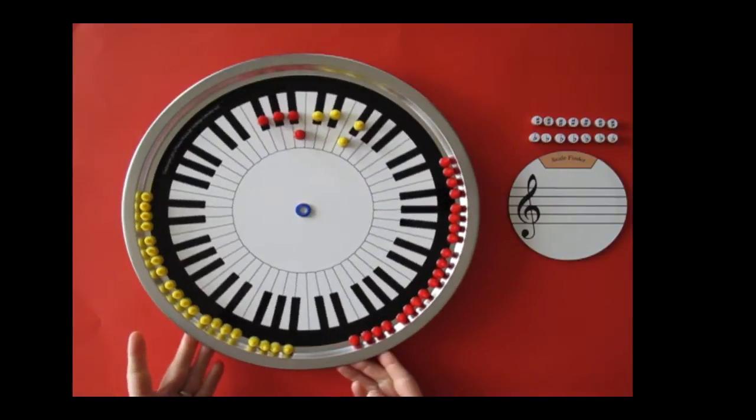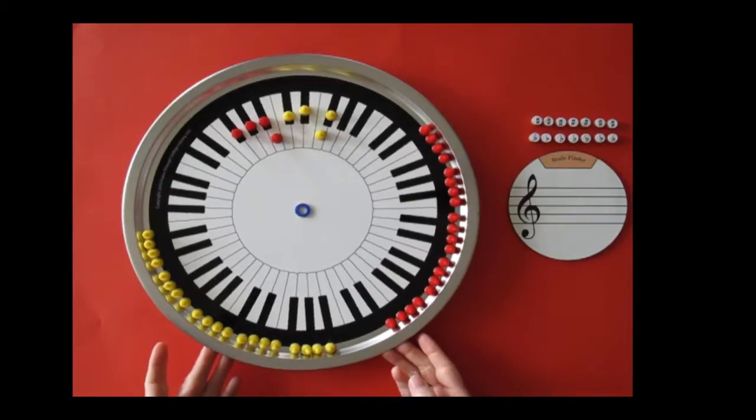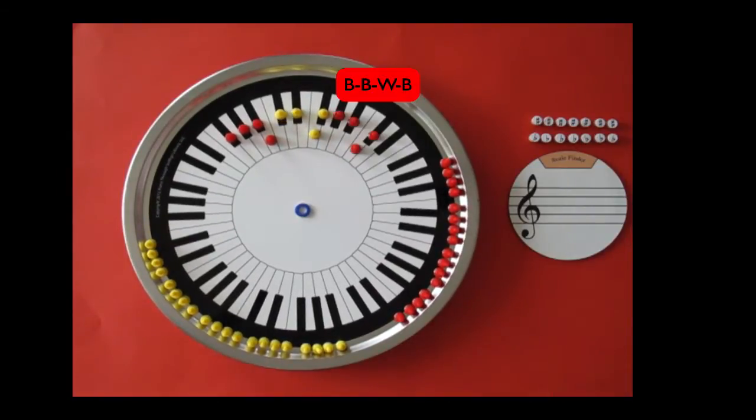Rotate the pizza wheel counterclockwise as you build tetrachords. A whole-step away, and another black, black, white, black.